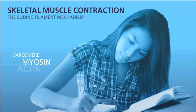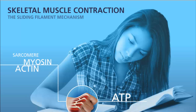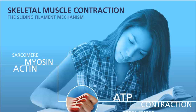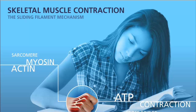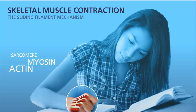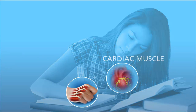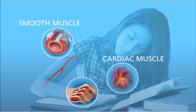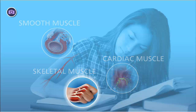You use muscles every day to do activities. This woman is using muscles to breathe, circulate blood, and move her hand to take notes. Your cardiac and smooth muscle tissues are involuntary — you do not consciously control their actions. Skeletal muscle, however, works under voluntary control.